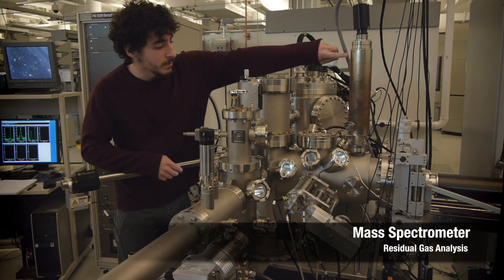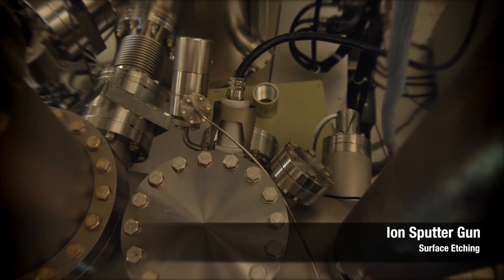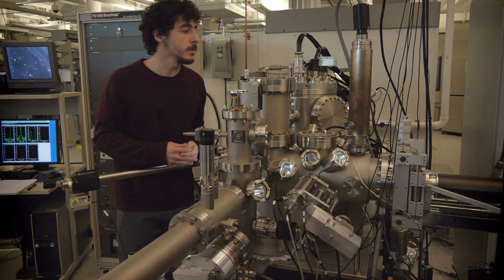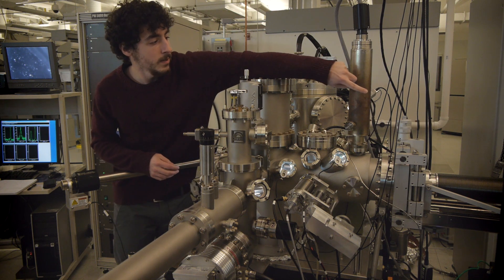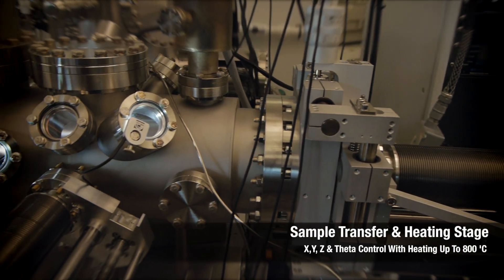Here is our mass spectrometer, here is our Kelvin probe down here, and in the back we have a sputter gun to clean the surface of our samples. That whole thing is our transfer arm that goes inside and moves our sample around, and that can also do heating.